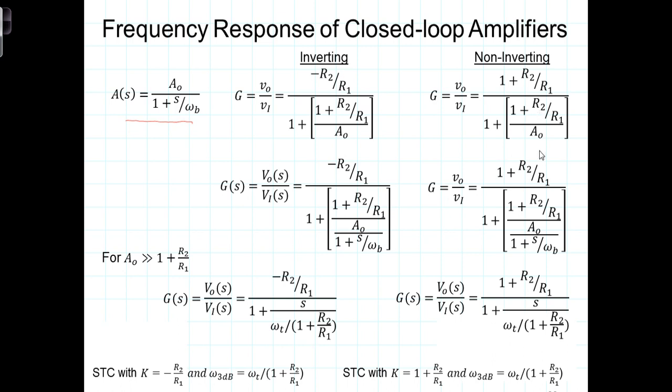Again, you can do the same kinds of calculations and come up with a very similar expression, only the DC gain term is 1 plus R2 over R1. It's just the non-inverting gain term. This is significant.